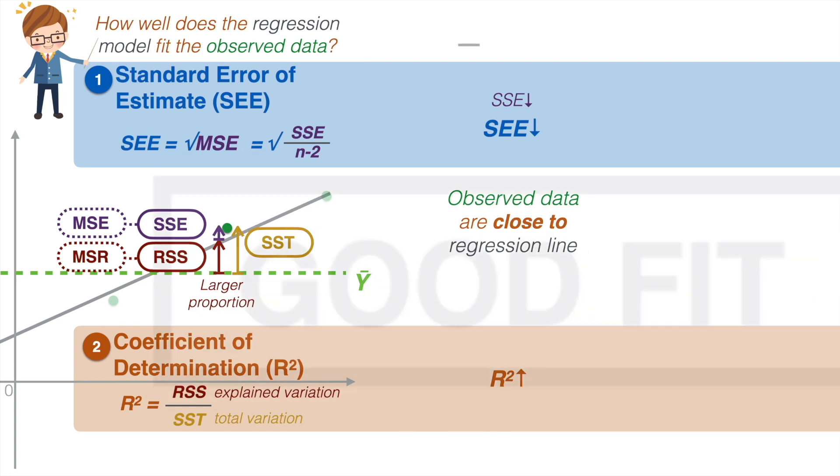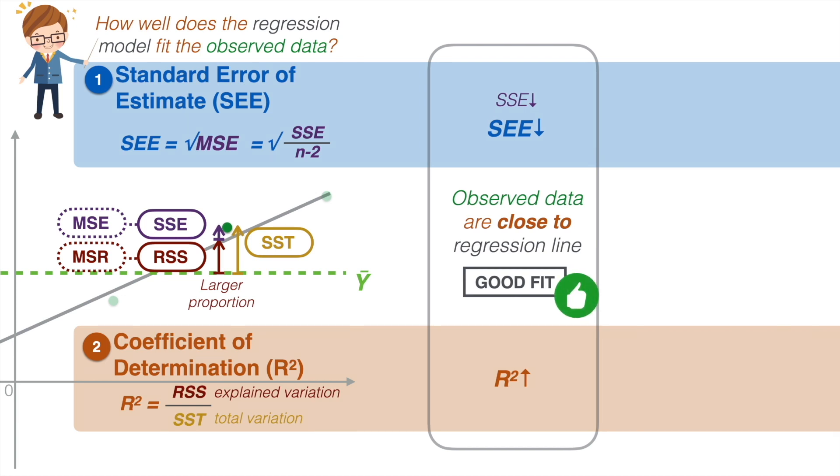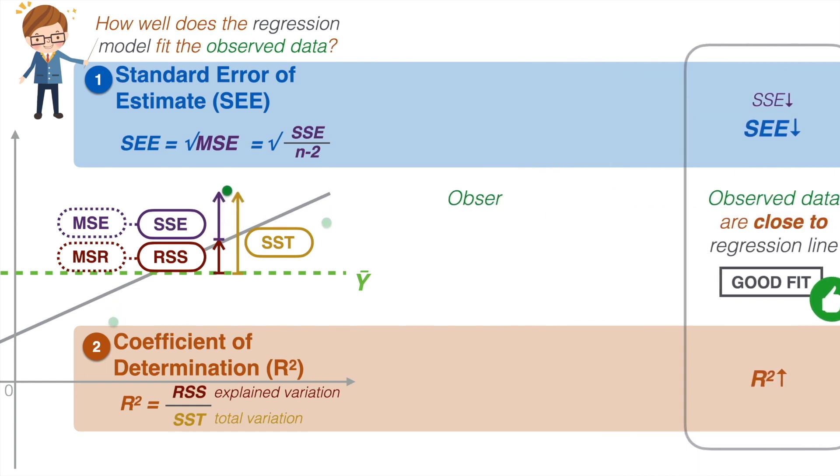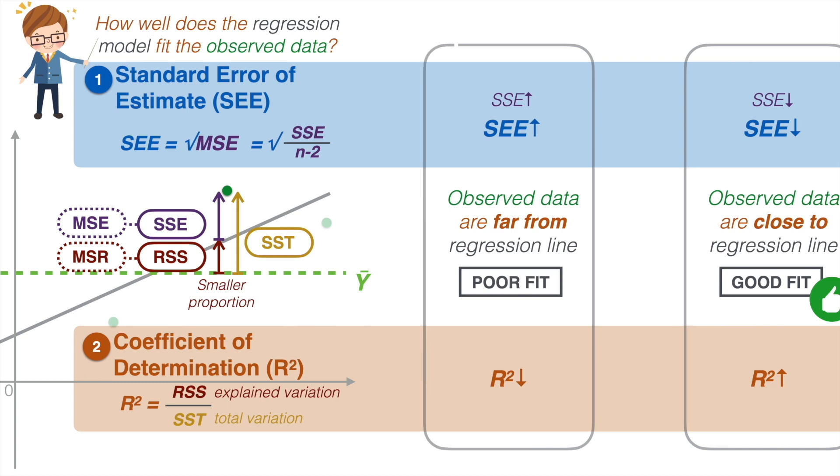Therefore, a low SEE and high R-square both indicate that the regression is a good fit, so we should have a higher confidence of the estimates. Conversely, if the observed data are very far from the regression line, then the R-squared will be low and the SEE is high, indicating that the regression is a poor fit. Our confidence of the estimates should be low.